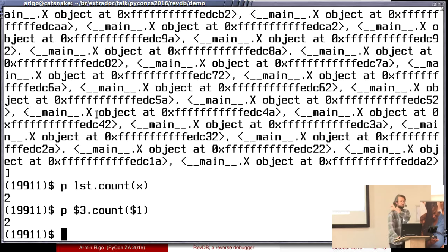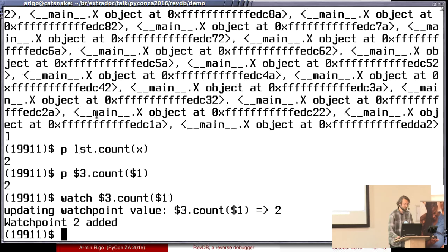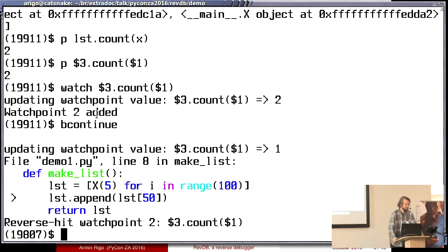Same thing as before. So this is 2. So when did this change? I'm going to watch it. I'm going to watch the result of the count operation. And now I can just go backward. Poof. And I have the line. So this is the line before which the object $1 appeared once in this $3. And after this line, it appears twice. So now I've found the problem.